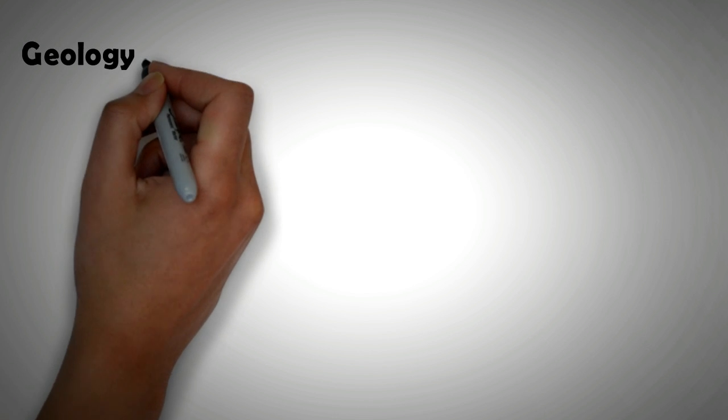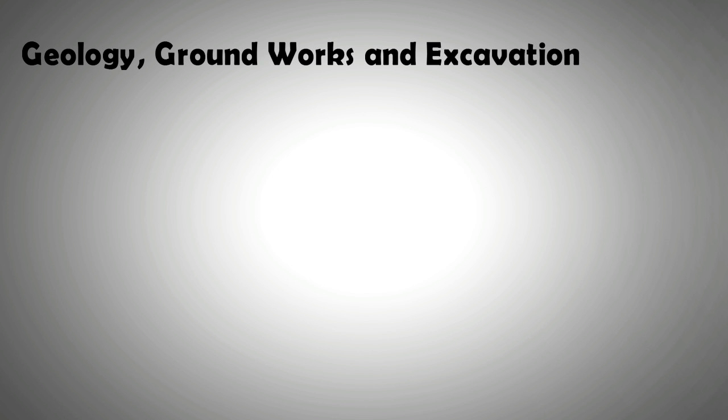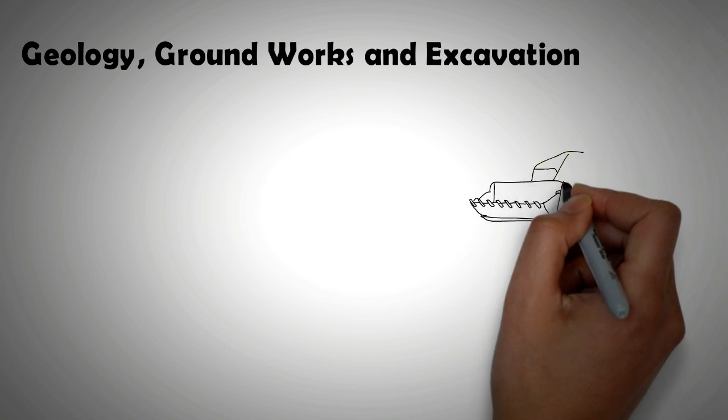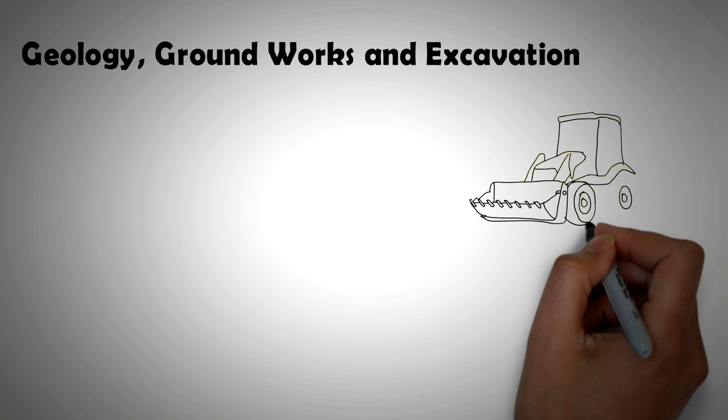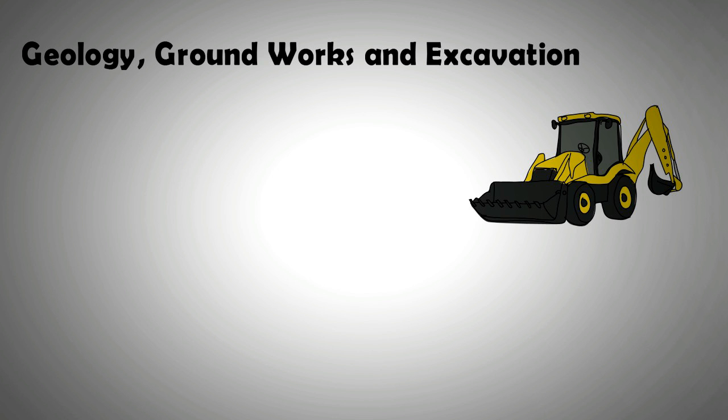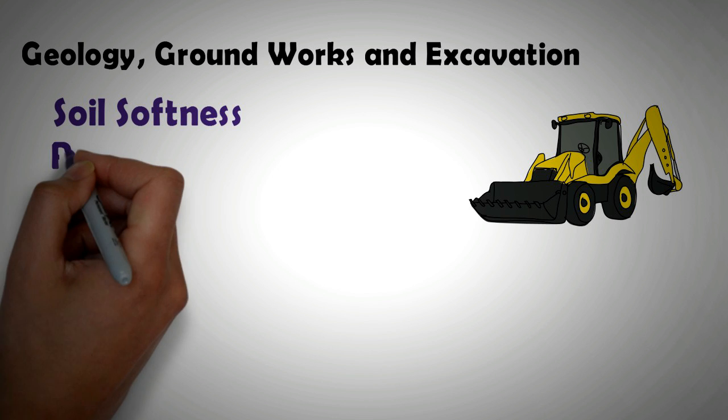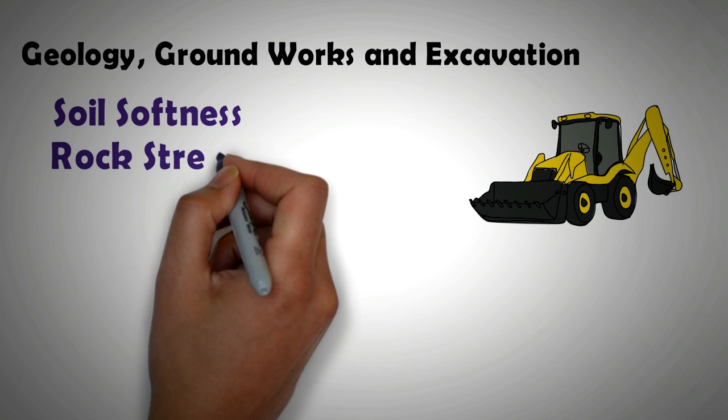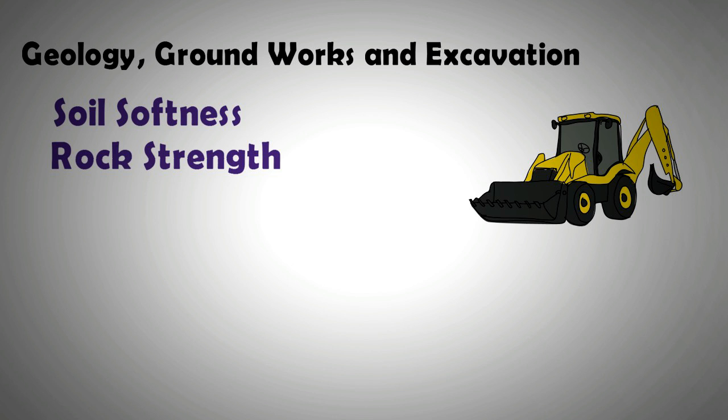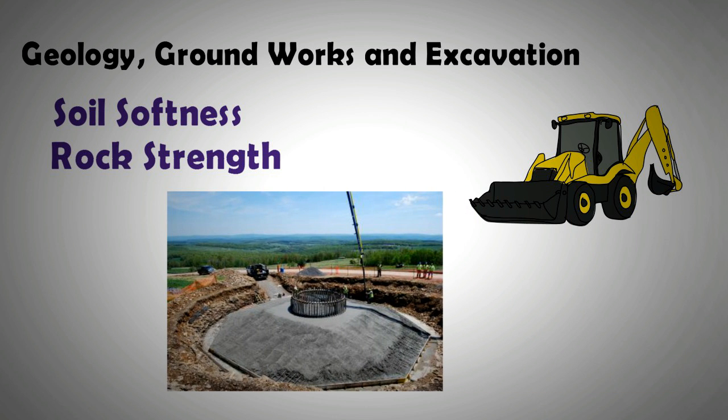Next up we have geology, groundworks and excavation. Power lines from the turbines to the substation in the wind farm have to be laid down, usually underground. Furthermore, access roads and the foundation have to be laid on the site. There are also geological parameters such as soil softness and rock strength that can add to the cost of groundworks. In places where geological parameters are unfavorable, deeper foundations have to be dug which adds to the cost. More concrete may be required for example on one site compared to another site.